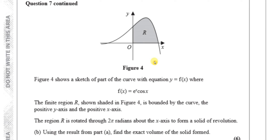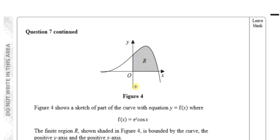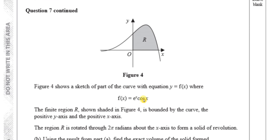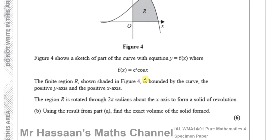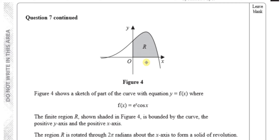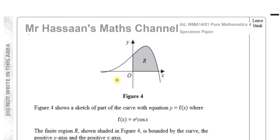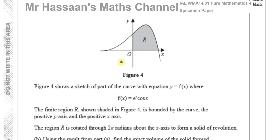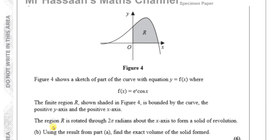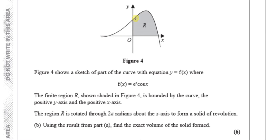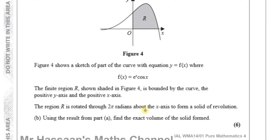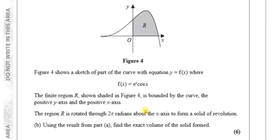Part B says: figure 4 shows a sketch of the curve with equation y = f(x), where f(x) = e^x·cos(x). The finite region R, shaded in figure 4, is bounded by the curve, the positive y-axis and the positive x-axis. The region R is rotated 360 degrees (2π radians) about the x-axis to form a solid of revolution. Using the result from part A, find the exact volume of the solid formed.